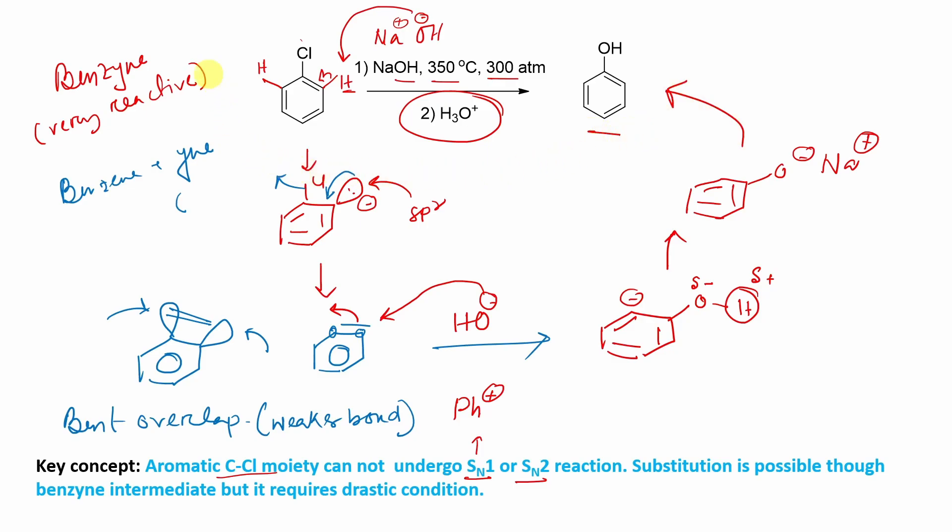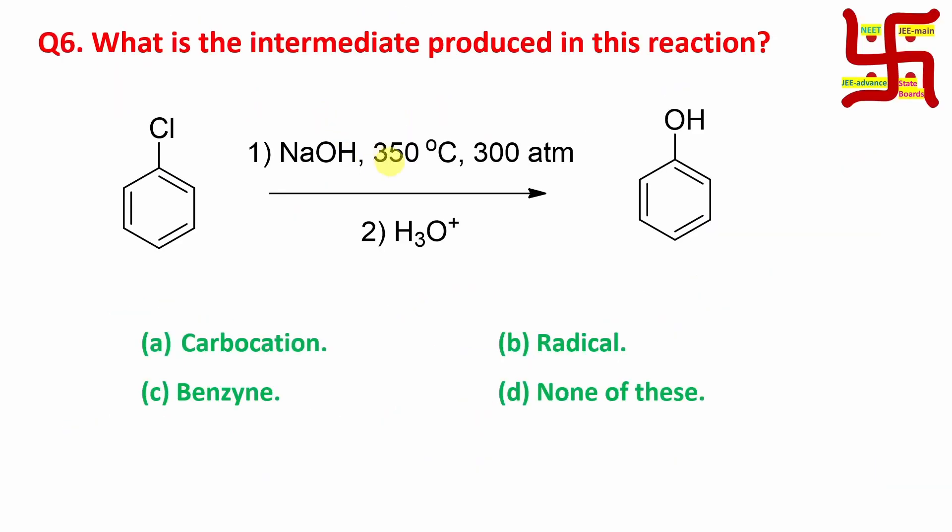So in this way, the intermediate of this reaction is, remember student, it is benzyne. So the answer of this question is benzyne. So I guess you have understood this question and by the way, this process, this reaction has a name. Remember, it is important: Dow process, where chlorobenzene is directly converted into phenol via benzyne as intermediate.